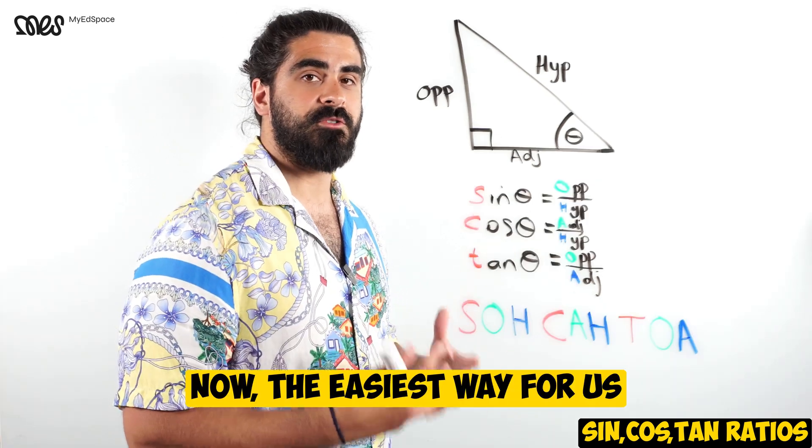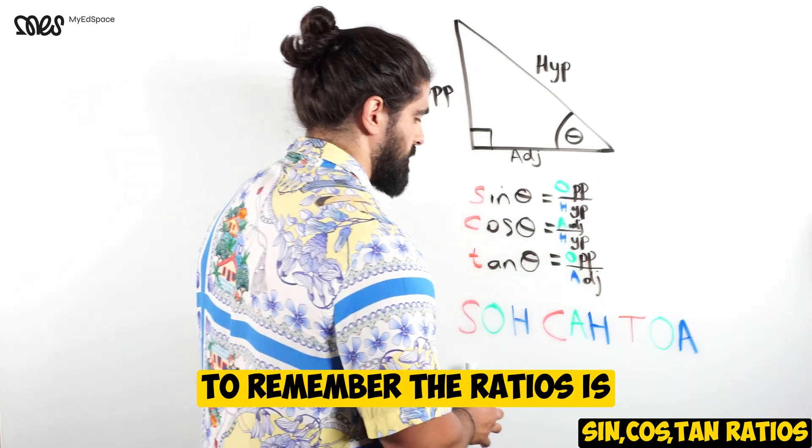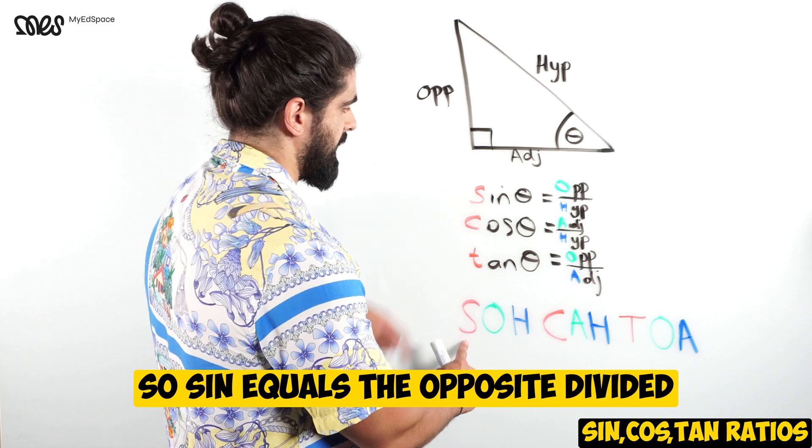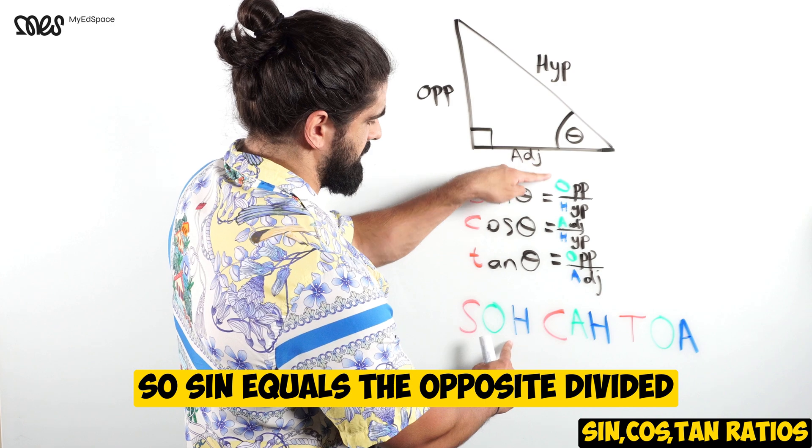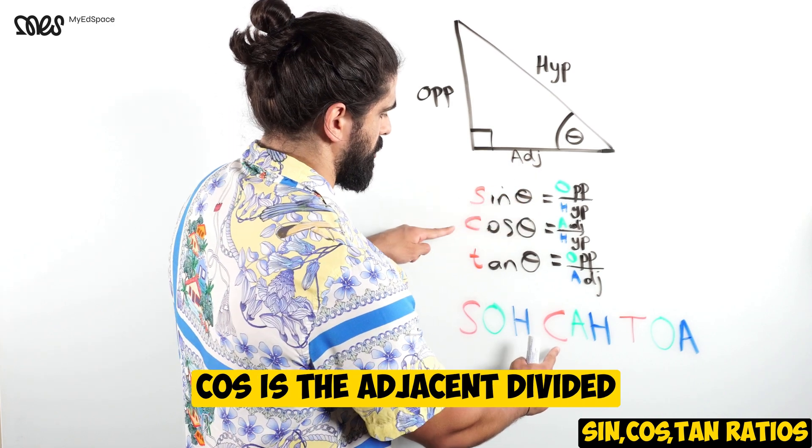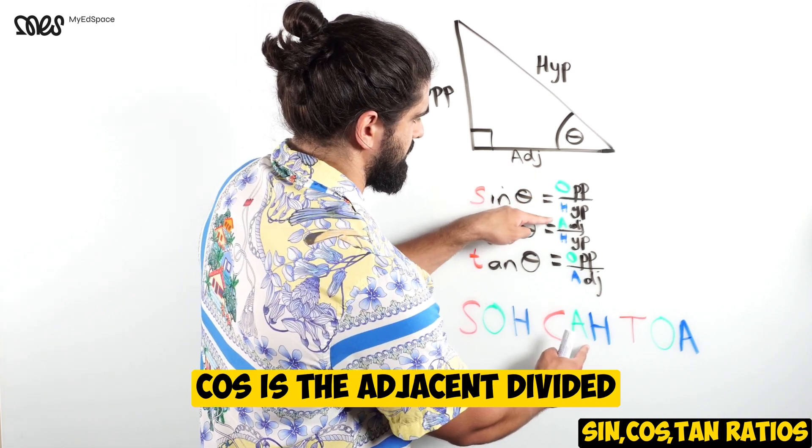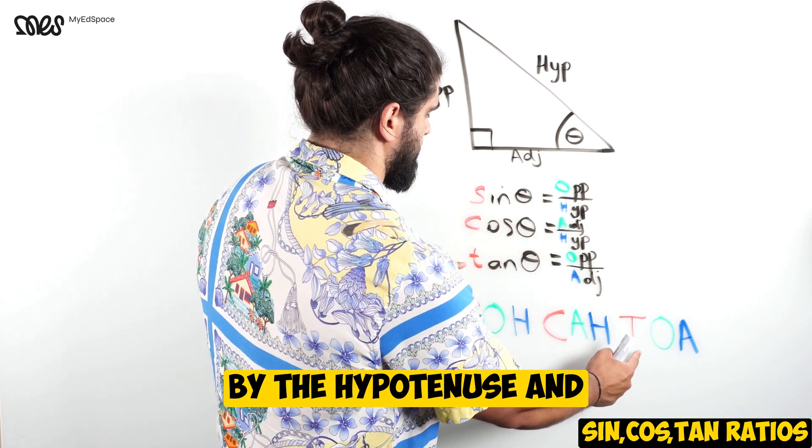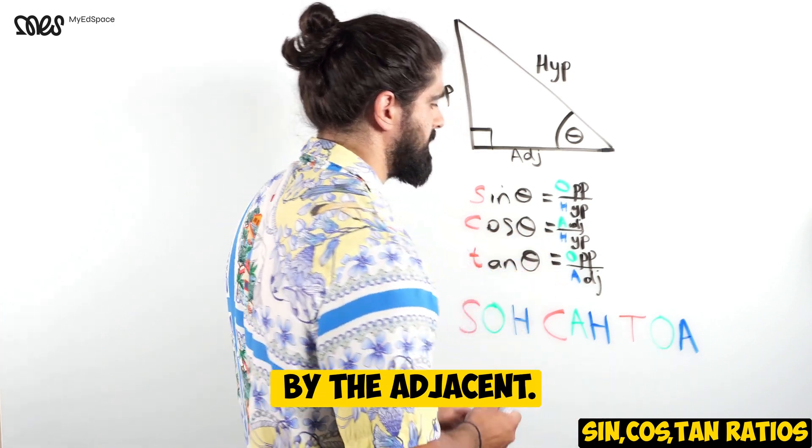The easiest way for us to remember the ratios is SOH-CAH-TOA. Sine equals the opposite divided by the hypotenuse, cos is the adjacent divided by the hypotenuse, and tan is the opposite divided by the adjacent.